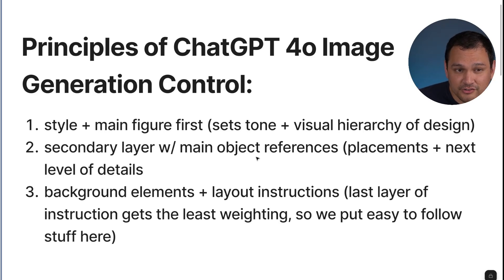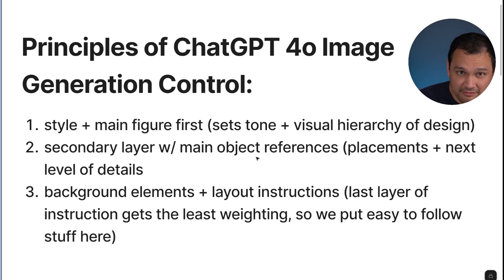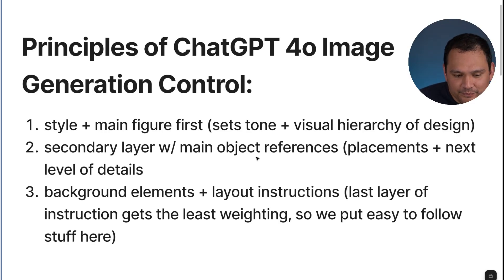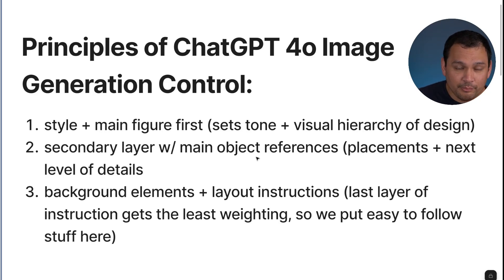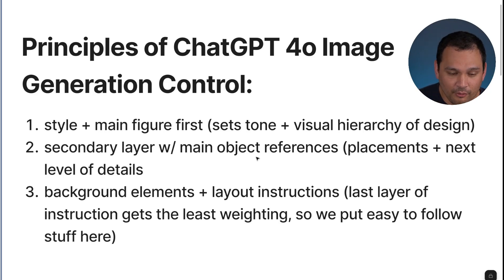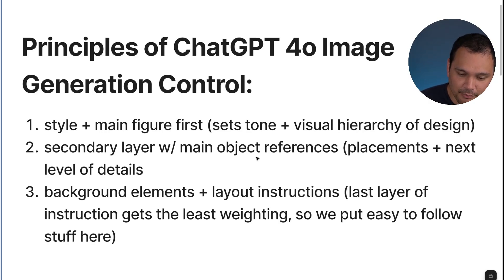This part should have a lot of processing power associated with it because the main figure and the style are both extremely important when it comes to having a good, well put together design. The second layer — the secondary layer — is anything that is important in terms of supporting the main object. We're going to go over a raccoon selfie for the medium length prompt.